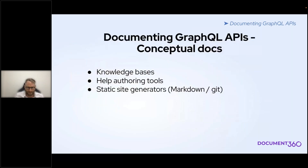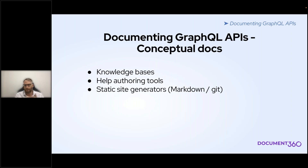Moving on to conceptual docs. These are things like get started guides, user guides, use cases, code samples, tutorials, and procedural content. Basically you can use any tool you're already using — knowledge bases, help authoring tools, and static site generators are all fair game for documenting that. It just depends on how flexible the tool is for keeping your field documentation up to date, and whether there's some kind of automation to ensure that those things stay current.